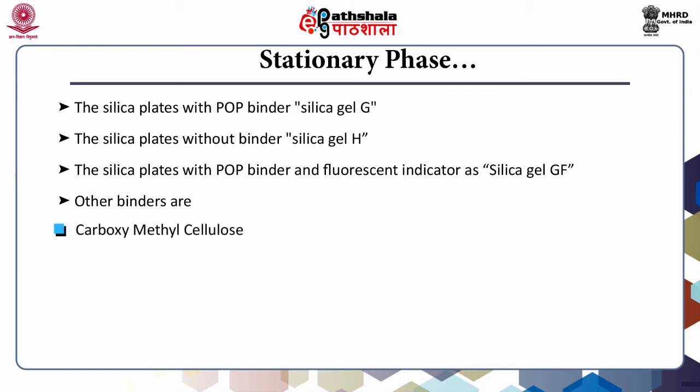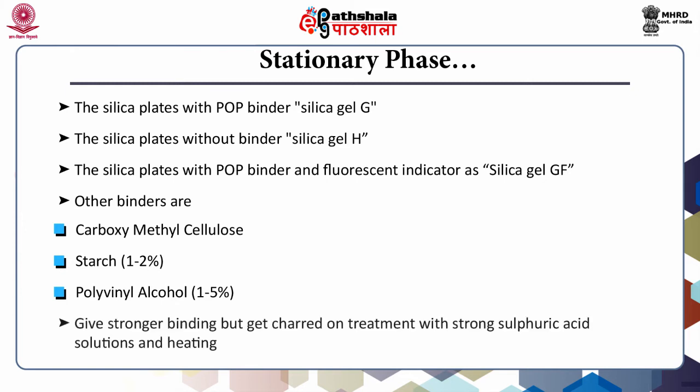Carboxymethyl cellulose, starch, and polyvinyl alcohol can also be used as binders. These give stronger binding but get charred on treatment with strong sulphuric acid solution and heating.